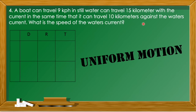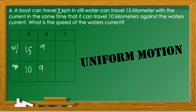Setting up the table: the first row is for traveling with the current and the second row against the current. Distances are 15 km and 10 km respectively. The boat's speed in still water is 9, so with the current the rate is (9 + x) and against the current it is (9 − x). Using t = d/r, the times are 15/(9 + x) and 10/(9 − x).